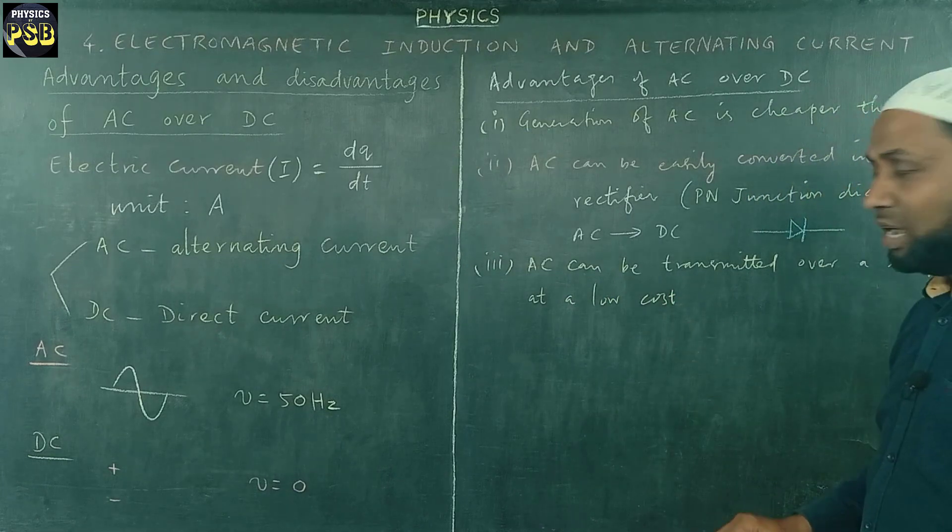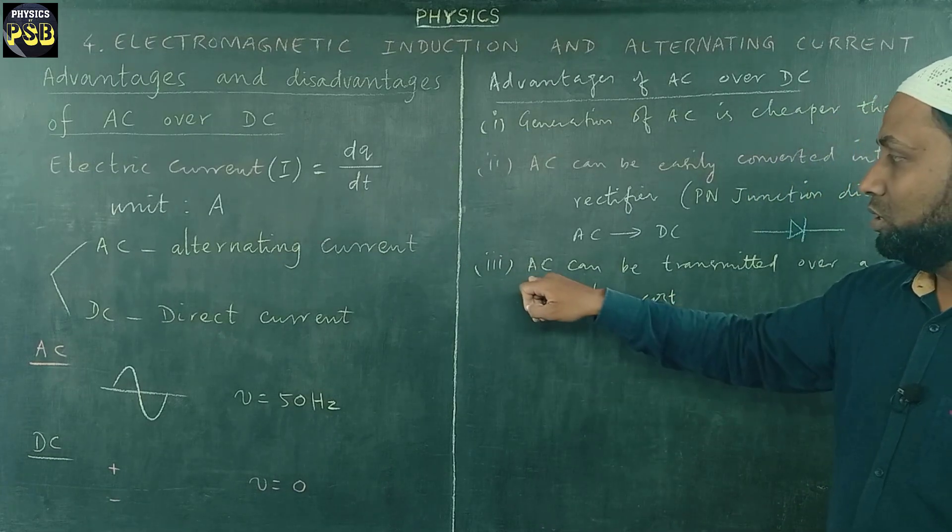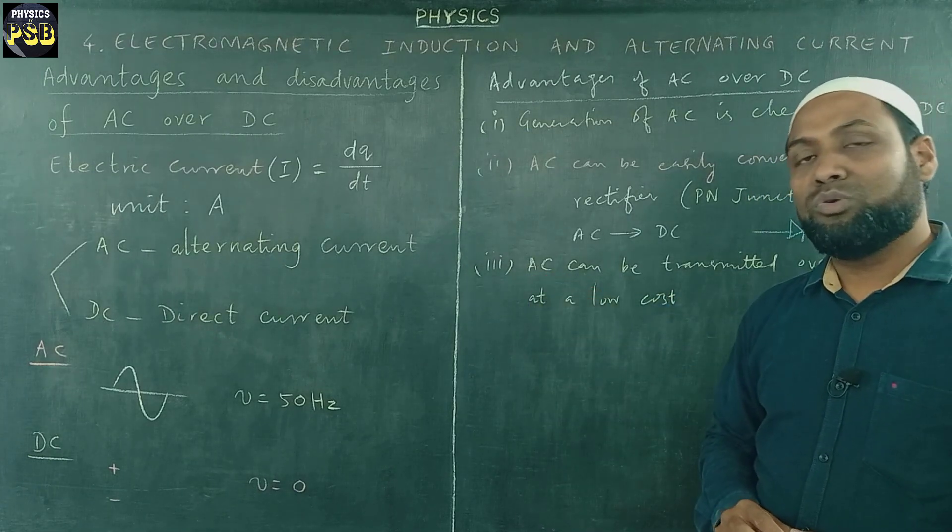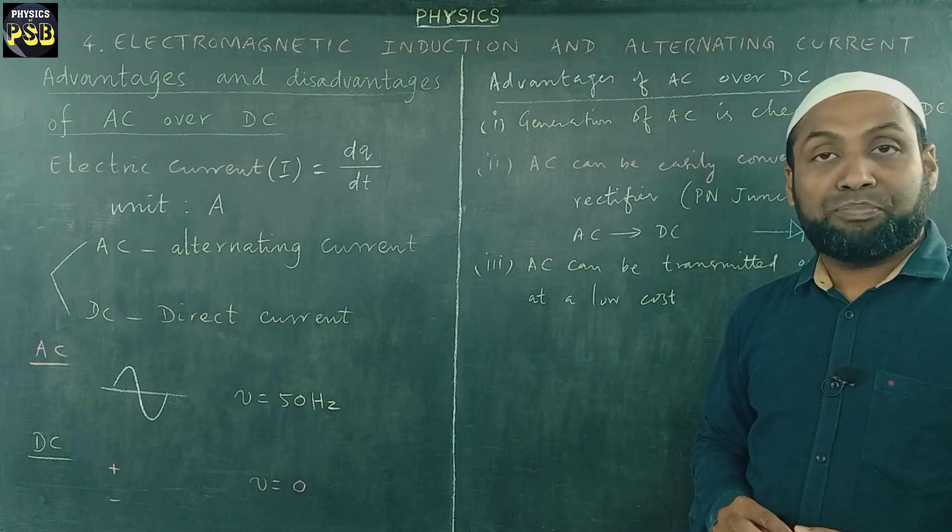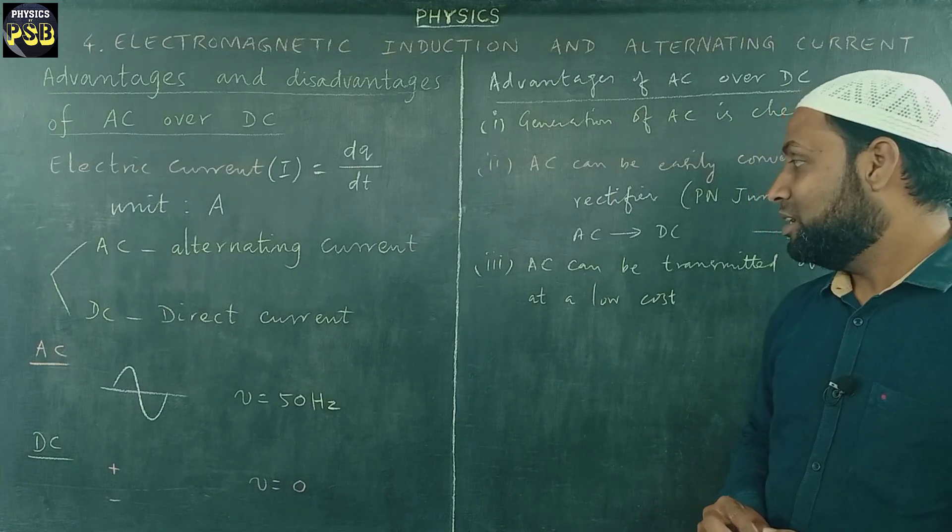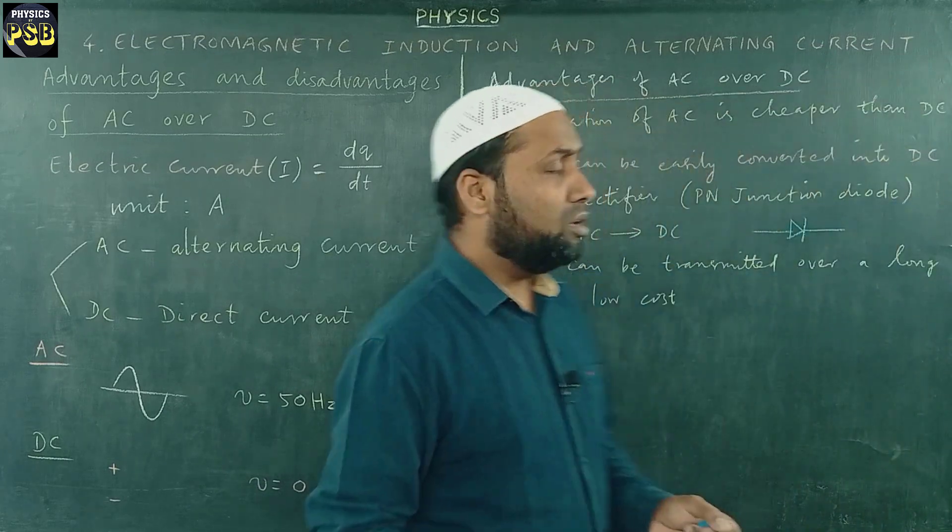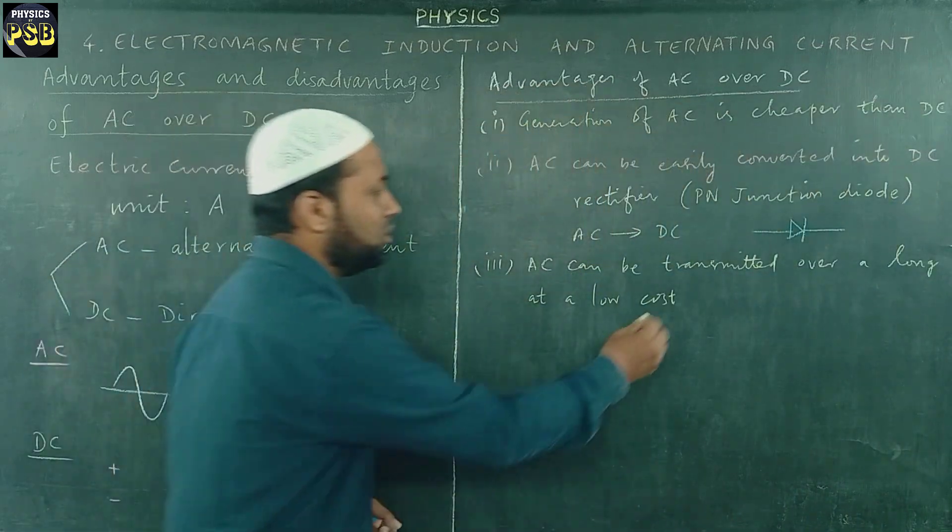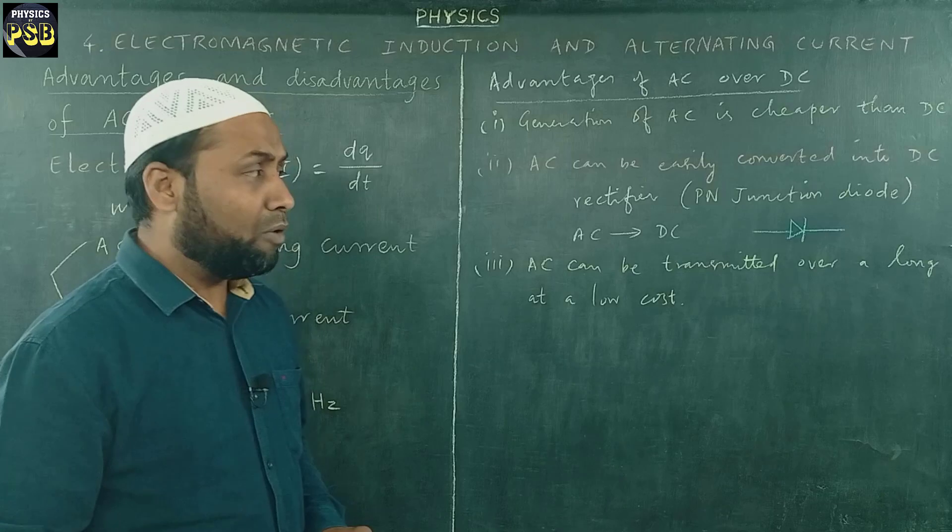But here, the condition is that when you increase the voltage of AC to a higher extent, the loss can be minimized. Whereas in case of DC, it is not possible. So this is always preferred for power transmission.